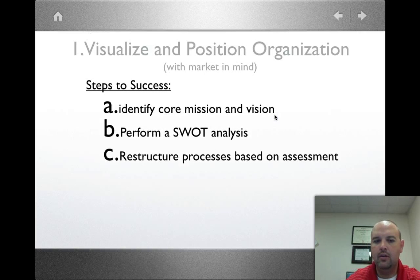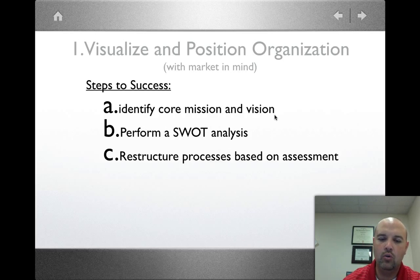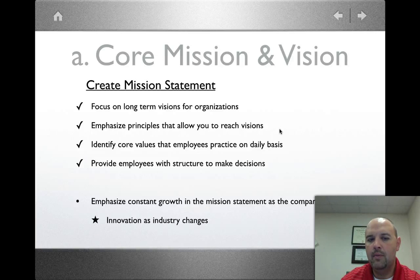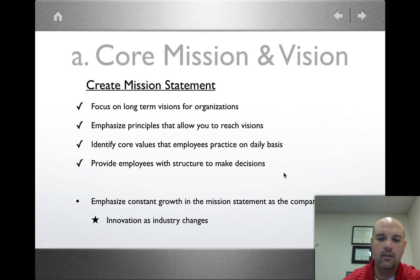The first component is to identify your mission and vision. Your company is going to come up with what your mission is and what you're trying to achieve. Once you get that, you perform a SWOT analysis — strengths, weaknesses, opportunities, and threats — and then you can adjust your initial goals and structure based on what you learned. A mission statement should focus on long-term vision: what are you trying to achieve, and what are your core values that every employee should practice every day? This helps employees make decisions — for instance, if honesty is a value, employees know they should make honest decisions and not cut corners.